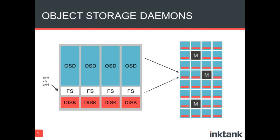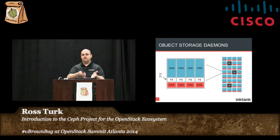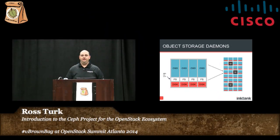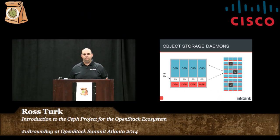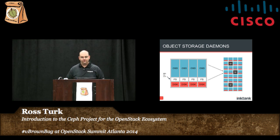EXT4, Btrfs, or XFS are the chosen file systems. We think Btrfs is the future, but EXT4 is the one we're choosing right now. On top of that file system you run object storage daemons — software agents that you configure with a path. What they do is take the storage resources available at that path and make them part of the RADOS cluster. Then they become one of many servers in that cluster.